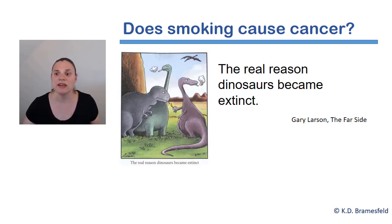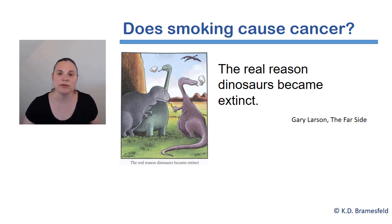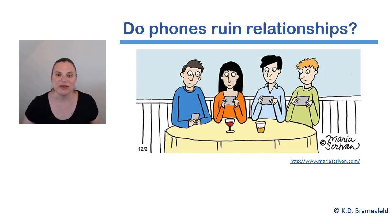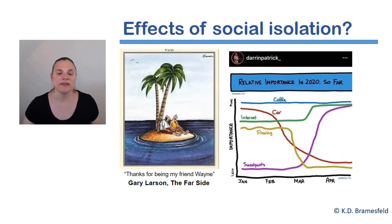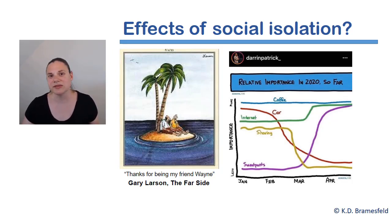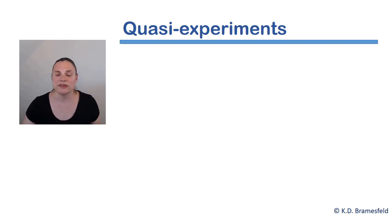For example, if we wanted to ask the question, does smoking cause cancer, then it would not really be logistically or ethically possible to randomly assign people to smoke versus not in order to track whether or not they get certain types of cancer. If we ask the question, are our smartphones ruining our relationships? Again, it would logistically be very, very difficult if not impossible to randomly assign people to use smartphones versus not. What about the effects of social isolation? We can't randomly assign people to experience social isolation versus not in order to examine what the relative impacts might be. So each of these questions lend themselves nicely to what are called quasi-experimental designs.